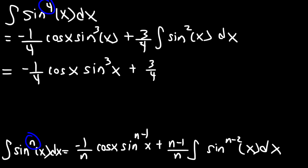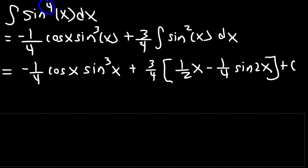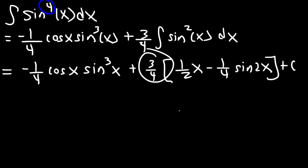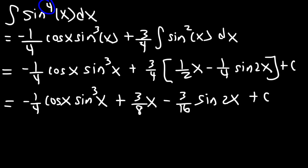Earlier in this video we said that the integral of sine squared was 1 half x minus 1 fourth sine 2x plus c. So let's distribute the 3 fourths to everything inside. It's negative 1 fourth cosine x sine cubed x, then 3 over 4 times 1 over 2 is 3 over 8 x, and then 3 fourths times 1 fourth is 3 over 16 sine 2x, plus c. This is the answer if you want to leave it in that form.